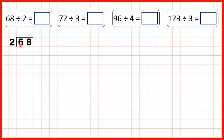We start by dividing digits in larger place values, so first we need to divide the 6 in our tens by 2. Well, 6 is in the 2 times table, and because 3 times 2 is 6, we know that 3 must be the tens digit of our answer.